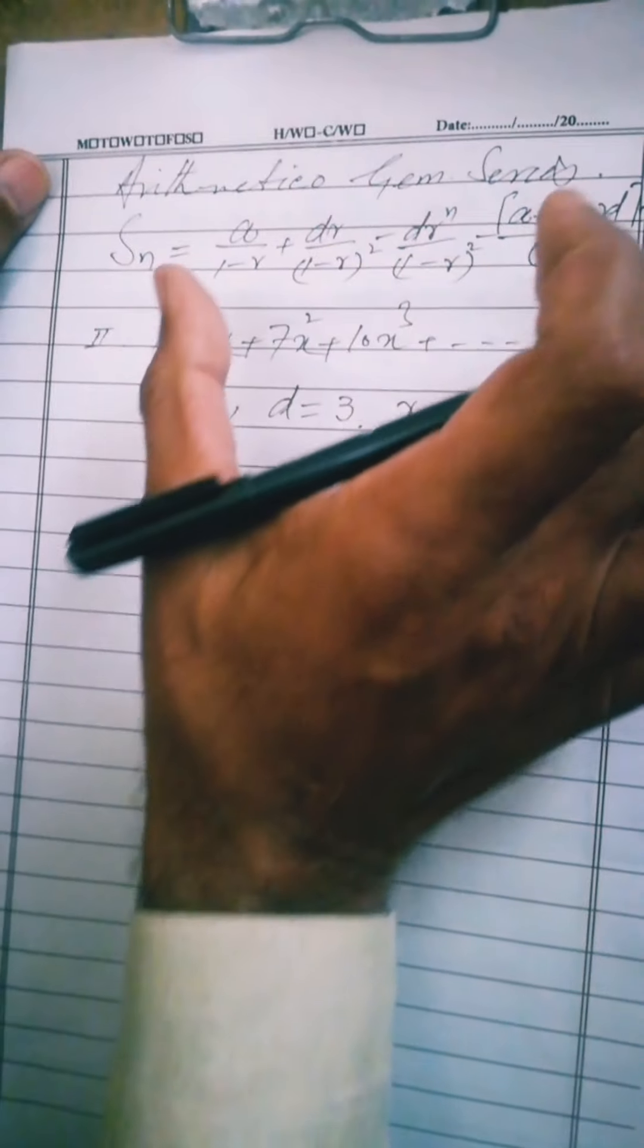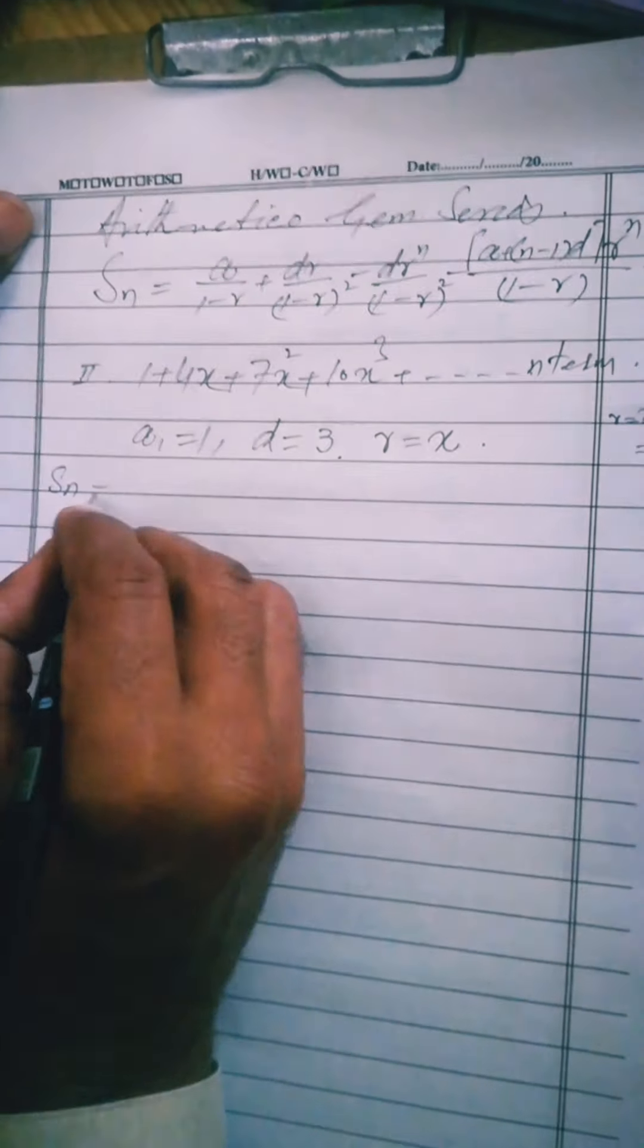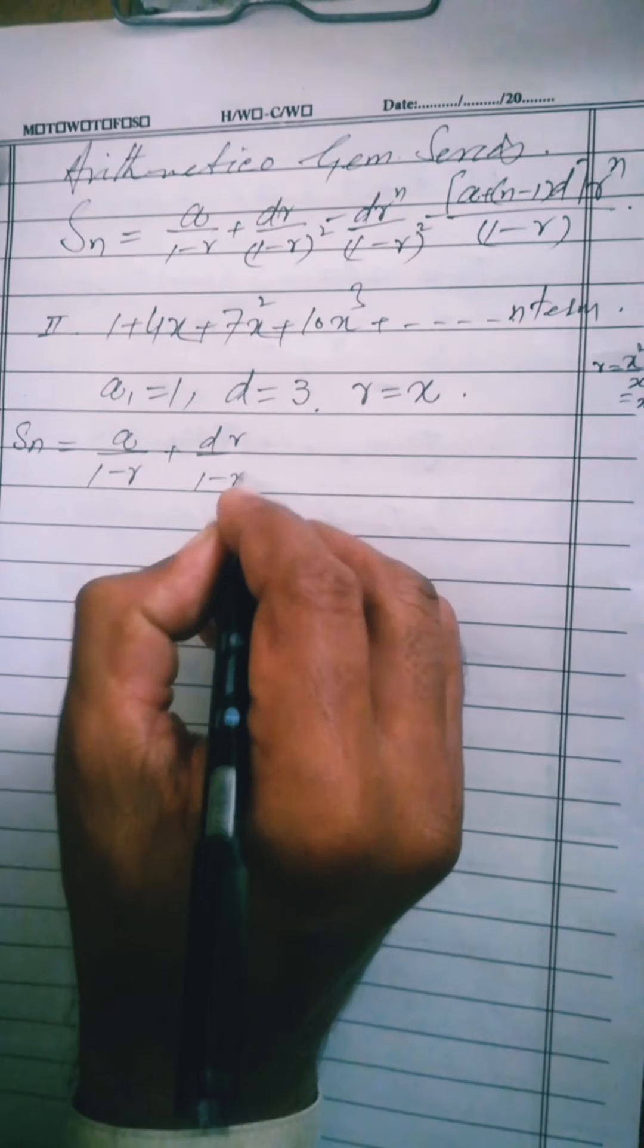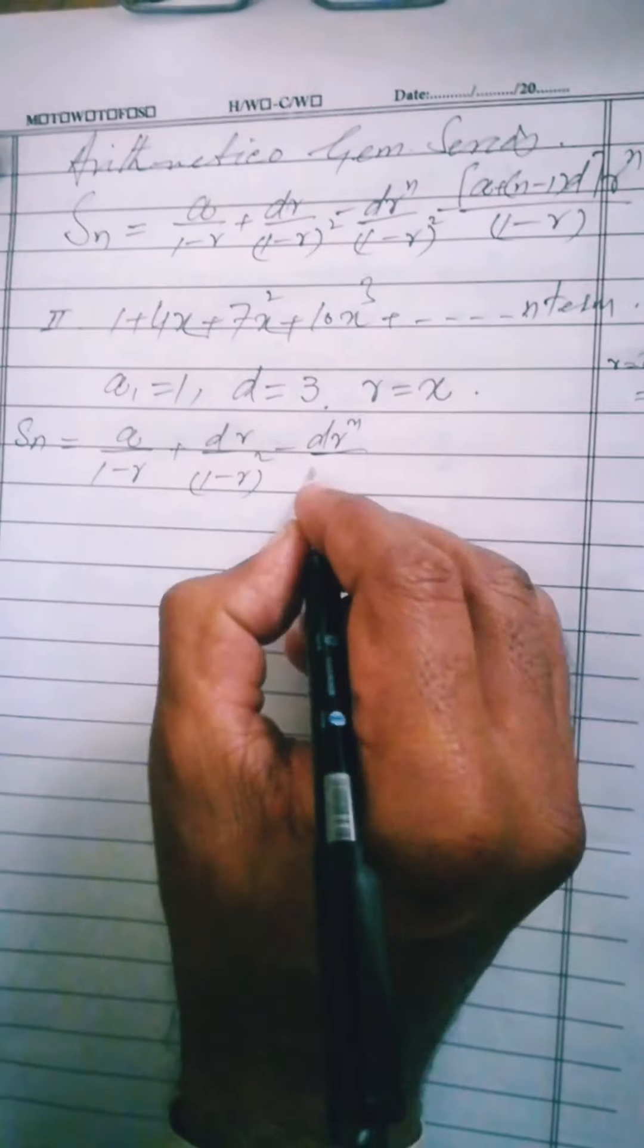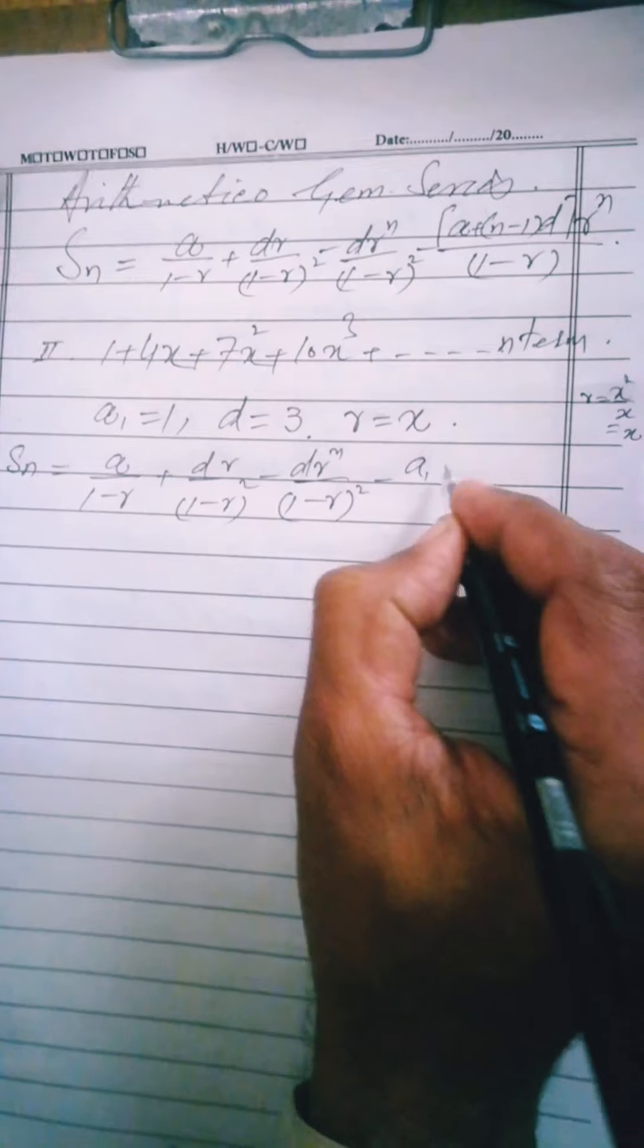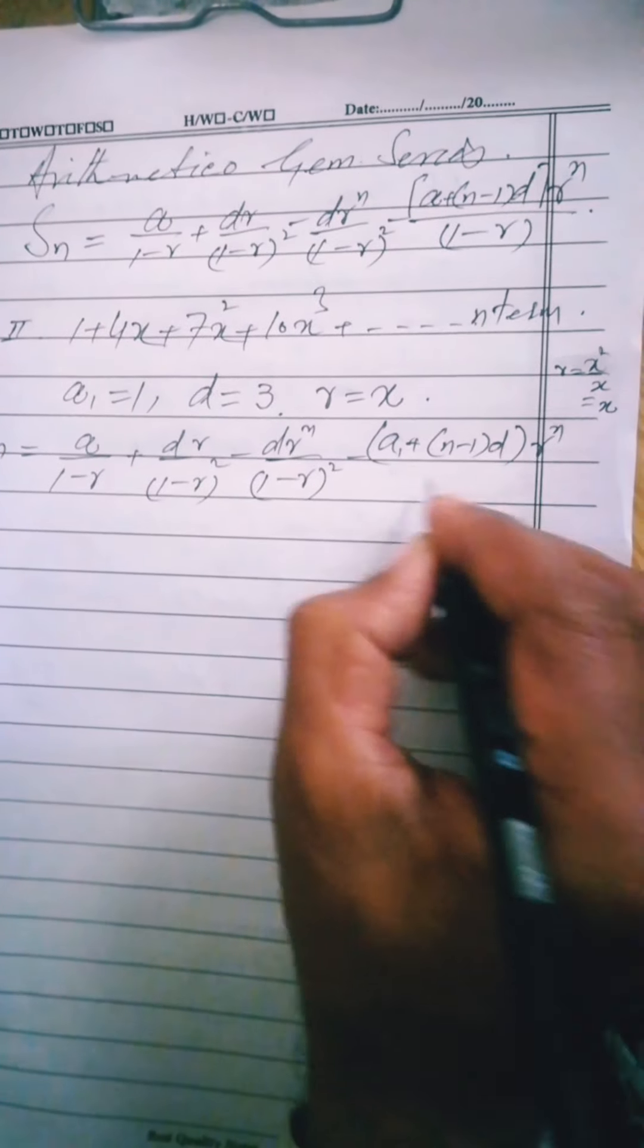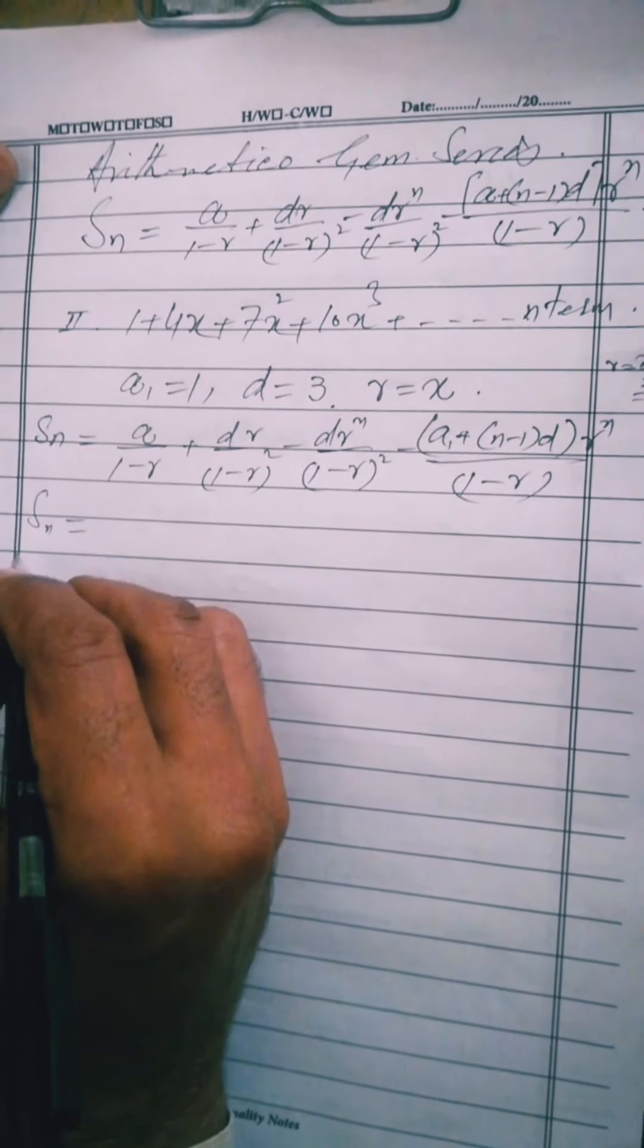Now the simple task is to write this formula here and put the values in it. sn equal to a divided by 1 minus r plus dr divided by 1 minus r square minus dr power n divided by 1 minus r square minus a plus n minus 1 into d into r power n divided by 1 minus r. Now just put the values in this.